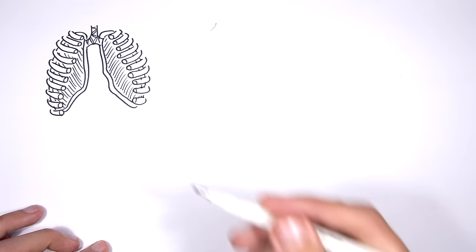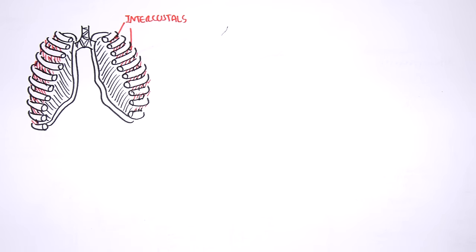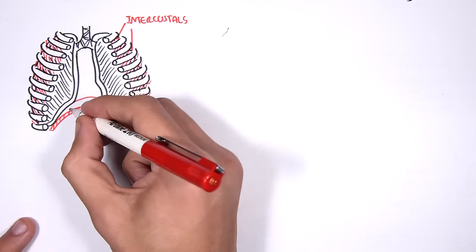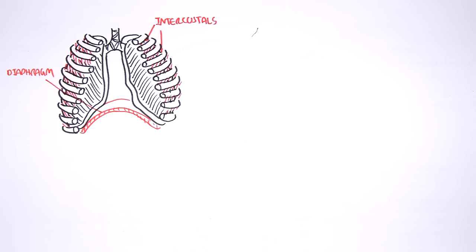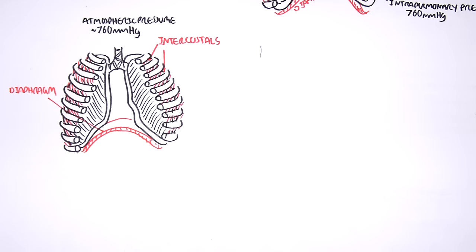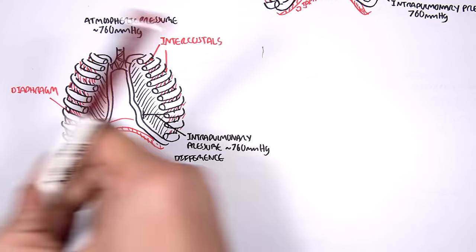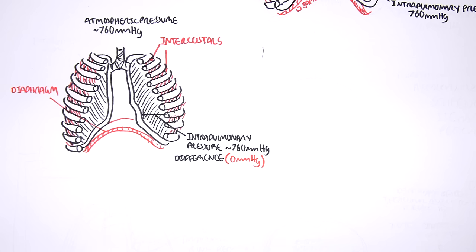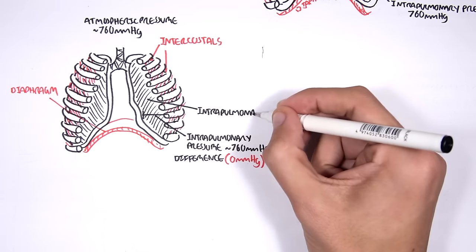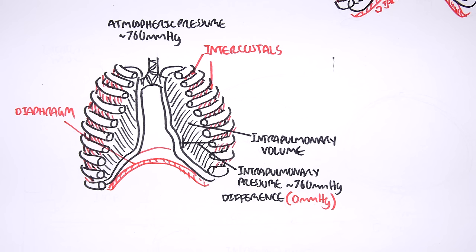Here are the ribs surrounding the lungs, with the intercostal muscles running between the ribs, and the diaphragm below. The atmospheric pressure is 760 mmHg and the intrapulmonary pressure is also 760 mmHg — a difference of 0 mmHg. Now, the intrapulmonary volume is the volume within the lungs. If the intrapulmonary volume changes, the intrapulmonary pressure will change as well, because there is a relationship between pressure and volume.